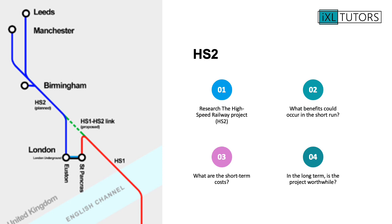Now let's think about HS2. HS2 is the High Speed Railway Project running from the north all the way down to the south. The whole aim of HS2 was to improve labour flexibility and to make the speed of transport between the north and south a lot quicker. Thinking about this new high speed railway project: what benefits could occur in the short run, what are the costs in the short term, and in the long term is the project worthwhile? Pause here and do some research on that.